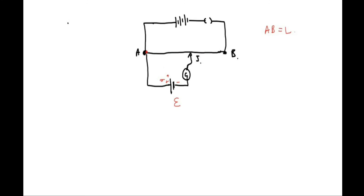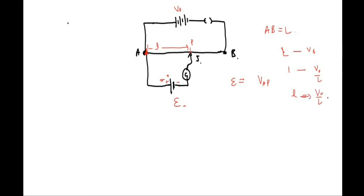When the galvanometer deflection is zero, the potentials at the connected points are equal. So the EMF of the cell will equal the potential across the length l of the potentiometer wire. Let's say the null point is at length l measured from the meter scale. The potential across this length is V0 divided by L, multiplied by l.